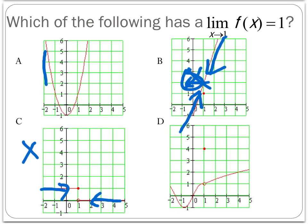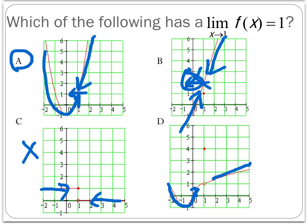Let's look at A. When I trace from the left side as x approaches 1 and from the right side, I look at the y-value I'm getting closer and closer to — and sure enough, 1 is the answer. But notice choice B: if I do the same thing, approaching from the left and right as x gets close to 1, I again get closer to the y-value of 1. So in this case, both A and D would be the correct answer.